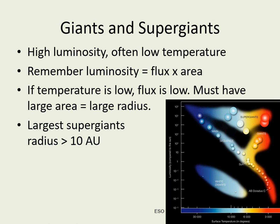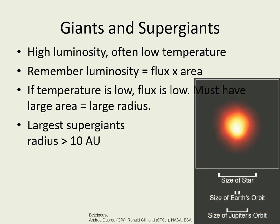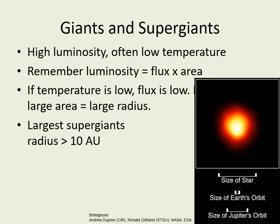The largest supergiants can have radii of up to 10 astronomical units. Remember that an AU is the average distance between the Earth and sun, so if you put a star like this into our solar system, it would fill up the whole inner solar system and its surface would extend out to the orbits of the outer planets. Betelgeuse, a supergiant star in Orion, is an example of this. Even though these stars have much larger radii than main sequence stars, their masses are not any larger.